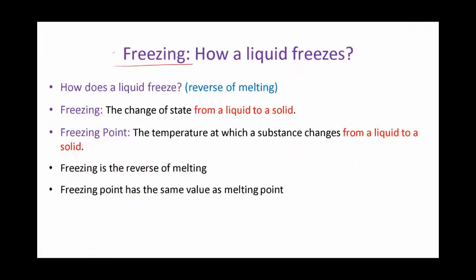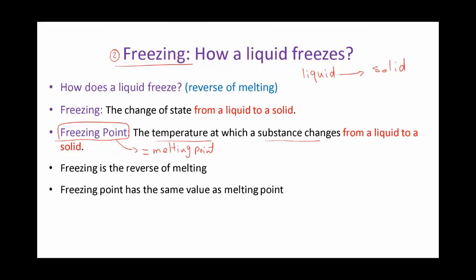Freezing is the opposite of melting — it's a change from liquid to solid. This must happen at a certain temperature we call the freezing point, which is the temperature at which a substance changes from liquid state into solid state. This freezing point has the same value as the melting point. For example, for water to change into ice, this will happen at zero degrees Celsius. So it's the reverse of melting, and the freezing point has the same value as the melting point.